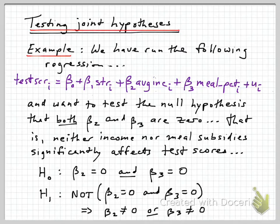This draws from the test score school district example. We've run the following regression: test score is the dependent variable for district i, and it's a linear function of the student-teacher ratio (STR), the average family income in the district (AVG INC), and the percentage of kids on subsidized meal plans. We want to test the null hypothesis that both β₂ and β₃ are zero, so that neither average income nor the meal percentage variables actually have any effect on test score once we control for the student-teacher ratio.